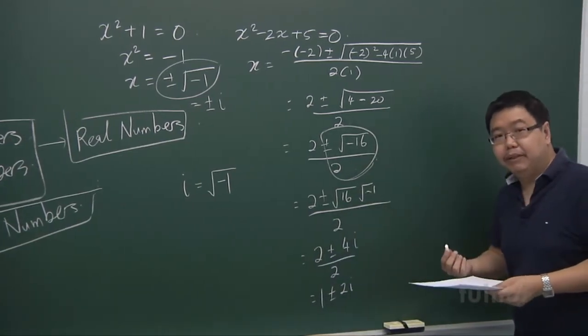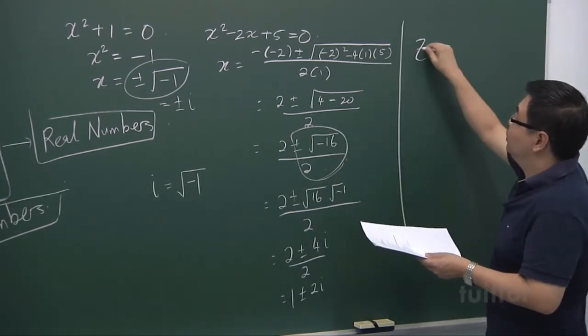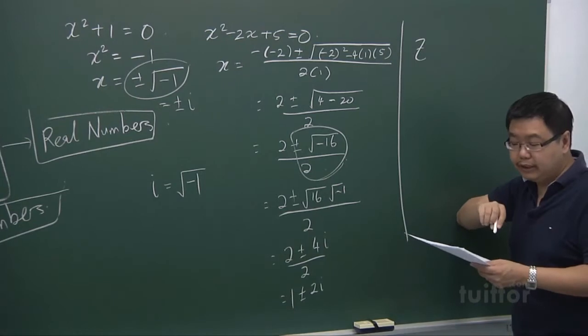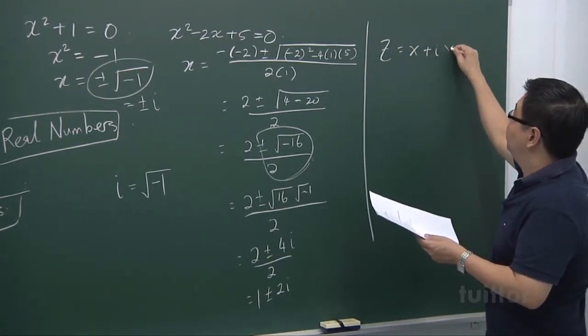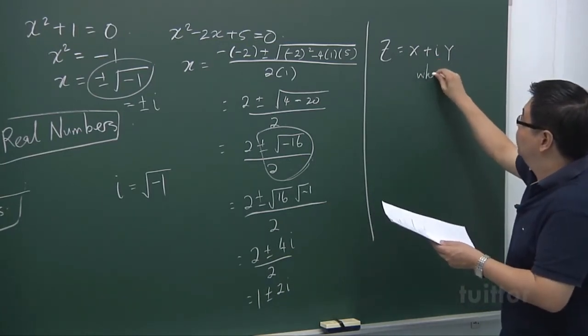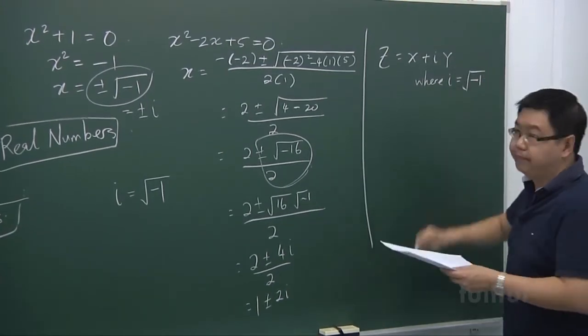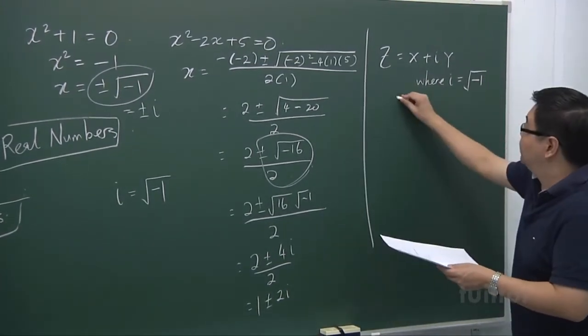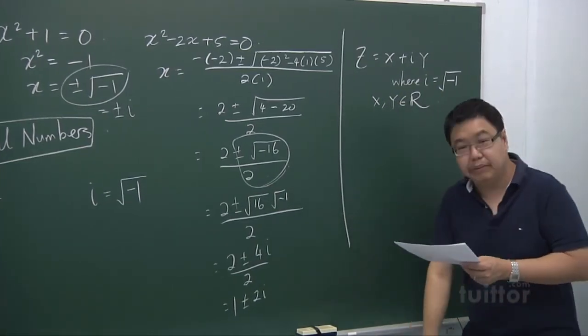So a complex number is made up of two things. The notation for complex numbers is the usual z. And it's made up of x plus iy, where this i is actually the positive square root of minus 1. And the x and y values are real numbers.